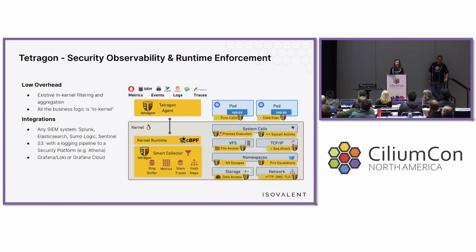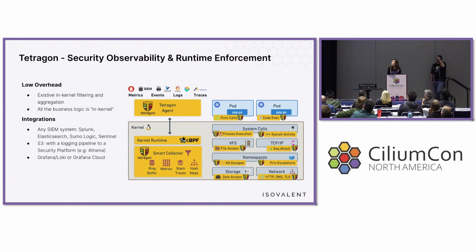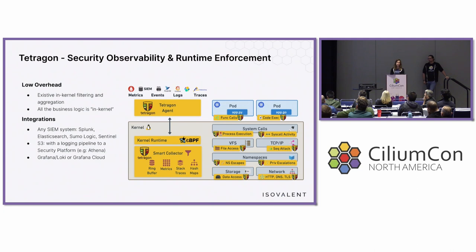We use eBPF to provide deep visibility. As you can see on the picture, we have visibility into process execution, system call activity, L3/L4 connections, data access, file access, Linux namespaces, and capability changes. All the extensive in-kernel filtering and aggregation means all the business logic happens in the kernel, leading to low overhead regarding CPU and memory. All observability events are exported to a JSON file, and you can integrate with many SIEM systems like Splunk, Elasticsearch, SumoLogic, export to S3, or use Grafana as an integration.